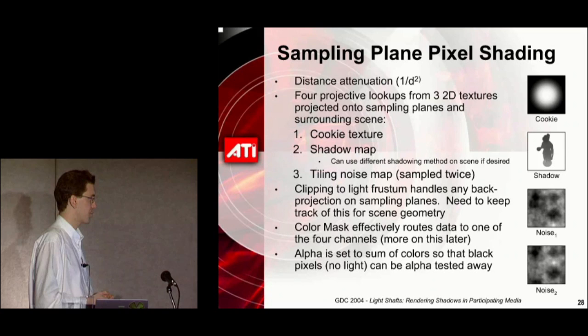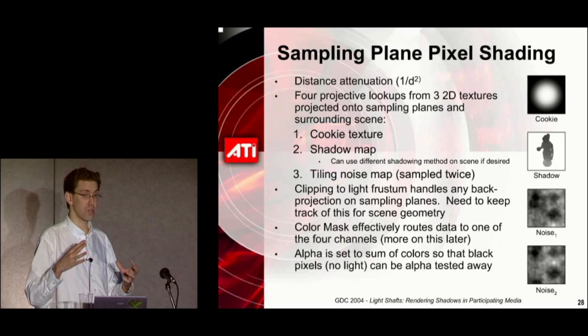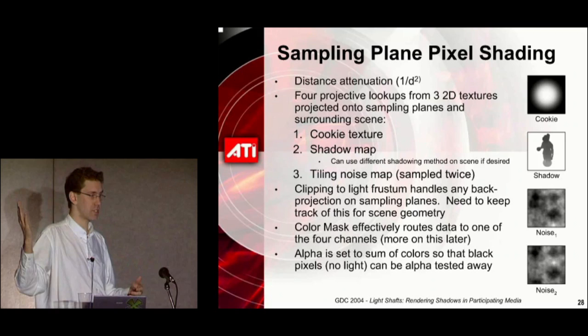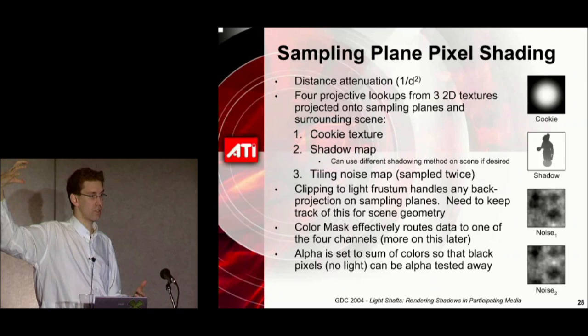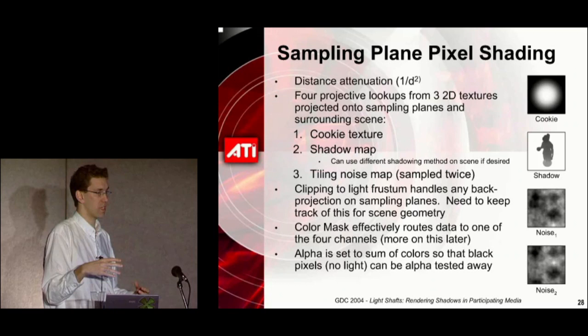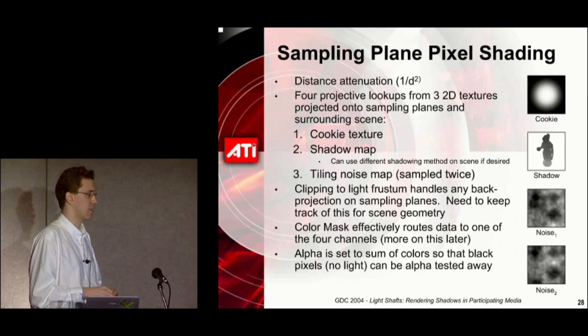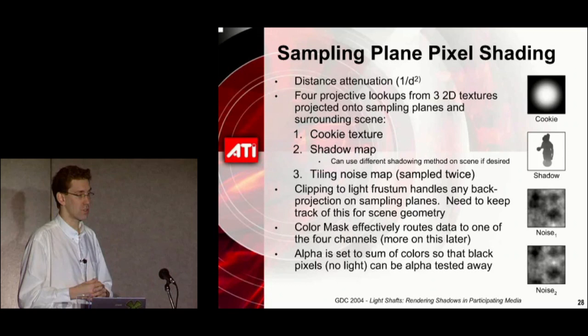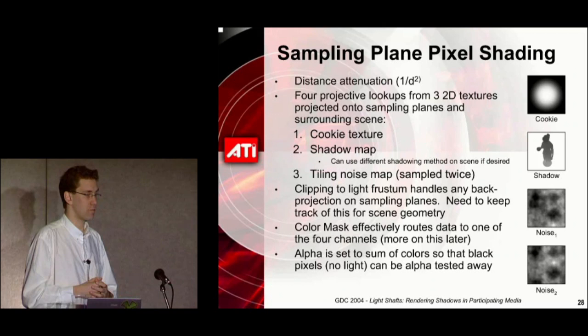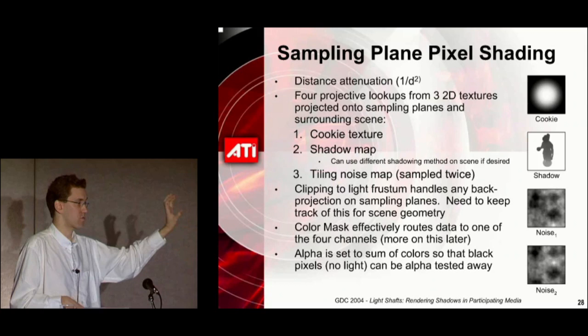Because you're clipping using user clip planes to the light frustum, that handles any back projection — projective texturing will also project backwards away from your light source, but clipping takes care of that. You need to make sure you handle that in the rest of the way you draw your scene. Additionally, you can set the alpha channel to the sum of all these terms so that you can alpha test pixels that end up still black, to save some memory bandwidth.